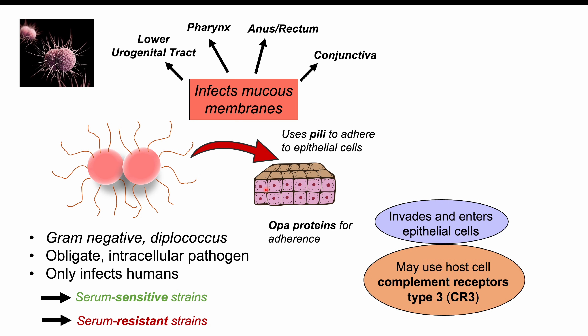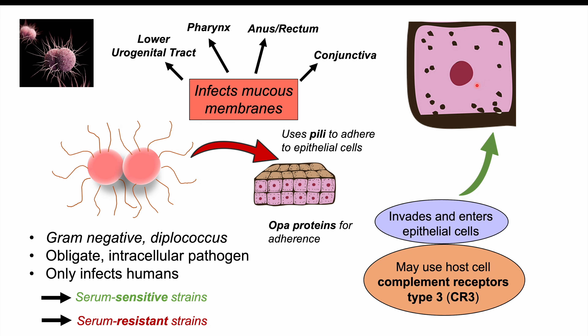Depending on the host cell being entered, such as a cervical epithelial cell, the bacteria can use host cell complement receptors type 3 (CR3) as a gateway into the cell. Once inside, they multiply. The host immune system then brings in immune cells, eventually leading to purulence — pus — and sloughing off of cells, producing discharge and the signs and symptoms of infection.